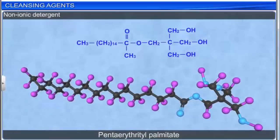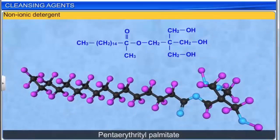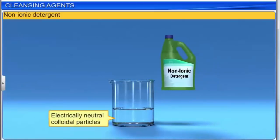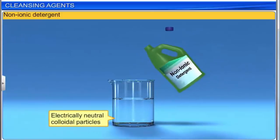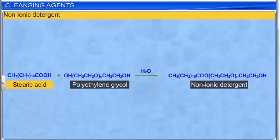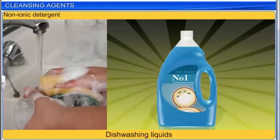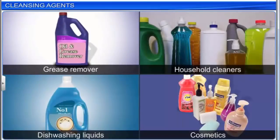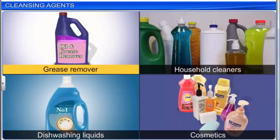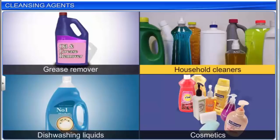Non-ionic detergents do not have any ions and are therefore resistant to water hardness deactivation. They produce electrically neutral colloidal particles in solution. The reaction between stearic acid and polyethylene glycol yields a non-ionic detergent. The liquid dish-washing detergents that we use are of the non-ionic type, and their mechanism of action is the same as that of soaps. Non-ionic detergents are excellent grease removers used in laundry products, household cleaners, dish-washing liquids, and even cosmetics.